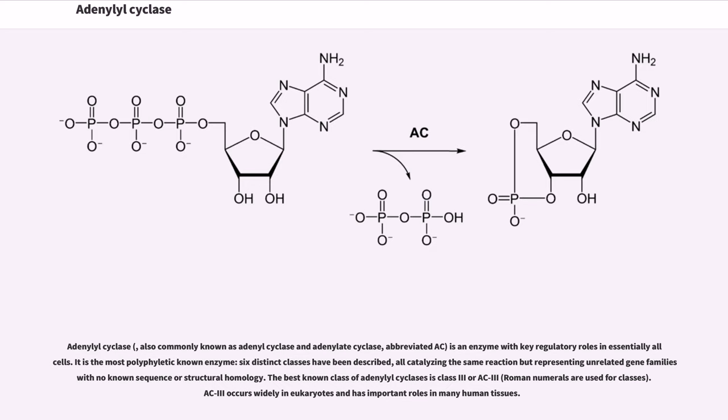It is the most polyphyletic known enzyme; six distinct classes have been described, all catalyzing the same reaction but representing unrelated gene families with no known sequence or structural homology. The best known class of adenylyl cyclases is class III or AC III. Roman numerals are used for classes. AC III occurs widely in eukaryotes and has important roles in many human tissues.